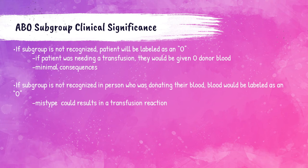For example, if a patient came into the blood bank and had a subgroup that was not properly identified, they would probably be listed as an O blood patient, which is inaccurate. If they needed a transfusion, they would be given O donor blood, which would have minimal consequences since O has no A or B antigens. However, if a donor's blood had a subgroup that was improperly identified as O, and that O blood was given to an O patient, this could cause a transfusion reaction. Mistypes can cause transfusion reactions, so it is critical that each patient is correctly ABO-typed every single time.